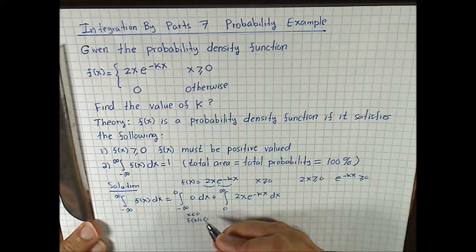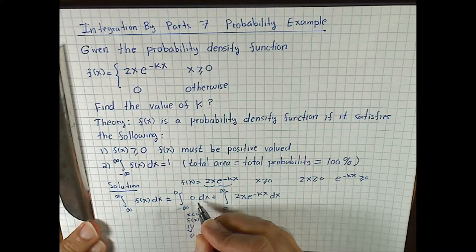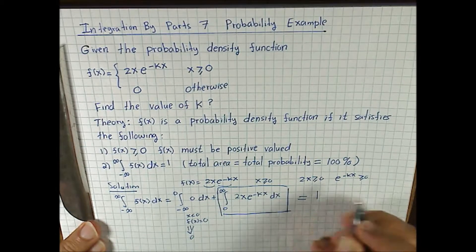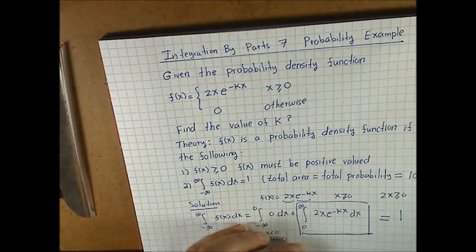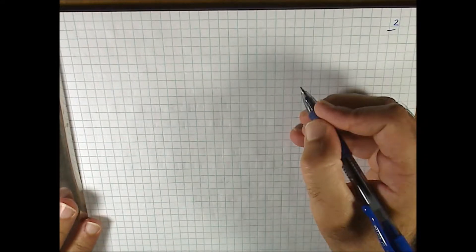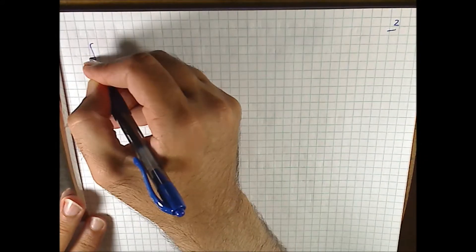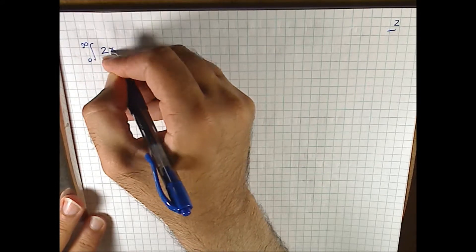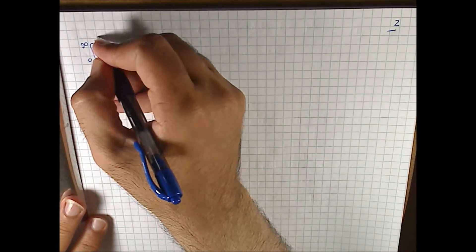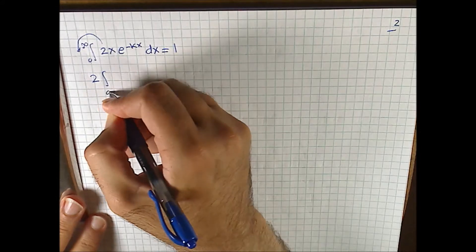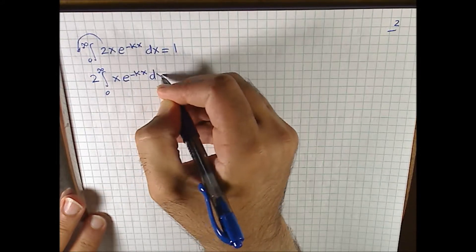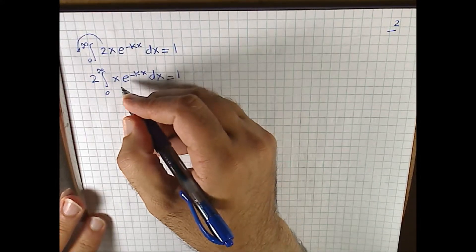So now, the first part is 0 because we're just integrating 0. Let's evaluate the remaining integral and force it to equal 1. We have the integral from 0 to infinity of 2x e to the minus kx dx equals 1. Taking out the 2, we get 2 times the integral from 0 to infinity of x e to the negative kx dx equals 1. This is an improper integral because the upper limit goes to infinity.